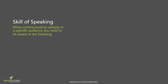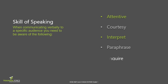When communicating verbally to a specific audience you need to be aware of the following: be attentive and maintain eye contact; be courteous — show respect and don't interrupt; interpret and recognize the intended message; paraphrase and summarize your understanding; then inquire with follow-up questions and communicate your understanding to make sure you understand the message.